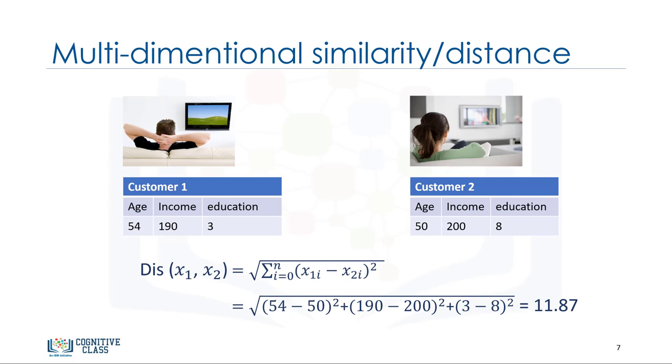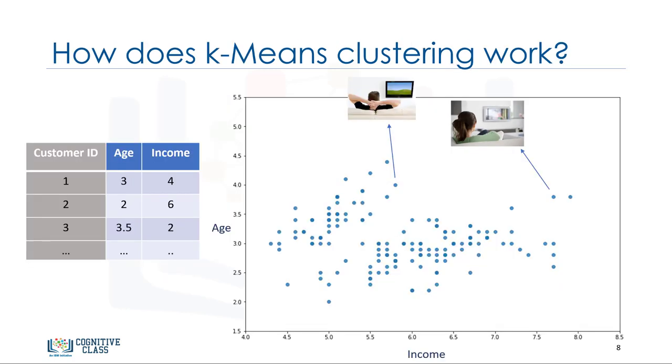For example, you may use Euclidean distance, cosine similarity, average distance, and so on. Indeed, the similarity measure highly controls how the clusters are formed, so it is recommended to understand the domain knowledge of your data set and data type of features, and then choose the meaningful distance measurement.